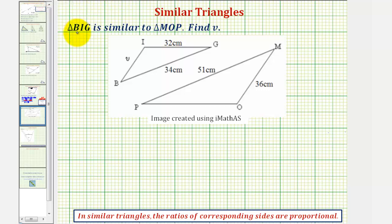If triangle BIG is similar to triangle MOP, then side BI corresponds to side MO. So here's side BI, and here's side MO. These two sides are corresponding.